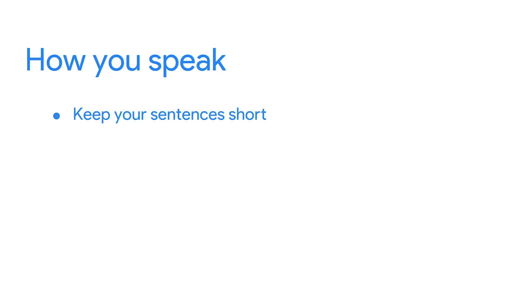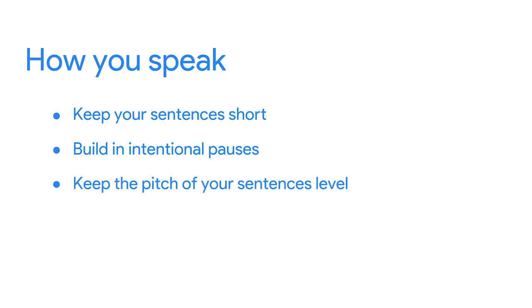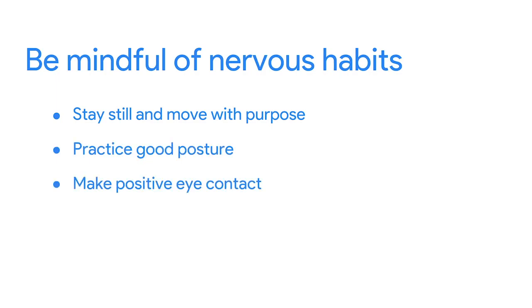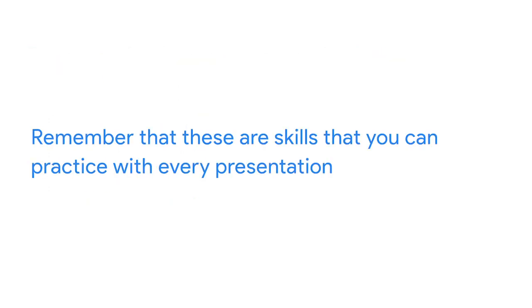It's also good to note that how you present information is just as important as what you present. Pay attention to how you speak. Keep your sentences short. Don't use long words where short words will work. Build in intentional pauses to give your audience time to think about what you've just said. Try to keep the pitch of your sentences level so that your statements aren't confused for questions. Also, try to be mindful of any nervous habits you have — maybe you talk faster, tap your toes, or touch your hair when you're nervous. That's totally normal, everyone does it. But these habits can be distracting for your audience. When you're presenting, try to stay still and move with purpose. Practice good posture and make positive eye contact with the people in your audience. Remember that you can practice and improve these skills with every presentation. Accept and seek out feedback from people you trust — feedback is a gift and an opportunity to grow.